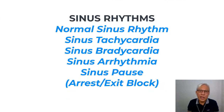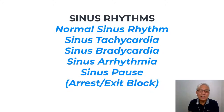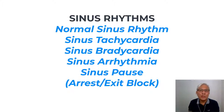In this section, we will learn about sinus rhythms — rhythms that originate from the sinus node. Our discussion will include normal sinus rhythm, sinus tachycardia when there is an acceleration of the sinus node rate, sinus bradycardia where there is a slow rate originating from the sinus node, sinus arrhythmia which is an irregular rhythm as a result of the influence of the respiratory pattern, and sinus pause, a situation wherein the sinus node has problems in its ability to spread the electrical impulse.